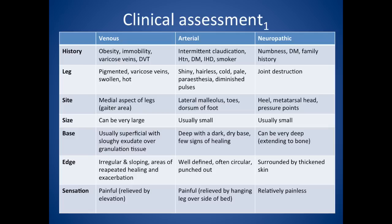Looking at the edge: with venous leg ulcers, you look for an irregular and sloping edge, and there might be areas of repeated healing and exacerbation. The edge of an arterial ulcer tends to be well-defined, often circular, and looks sort of punched out. Neuropathic ulcers have an edge usually surrounded by thickened skin. Venous leg ulcers tend to be painful and are relieved by elevation. Arterial ulcers are also painful but relieved by hanging the leg over the side of the bed. Neuropathic ulcers, by contrast, are relatively painless.